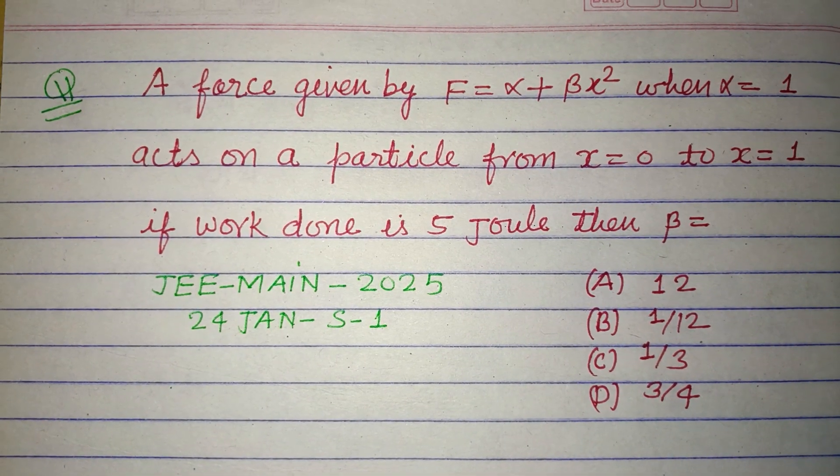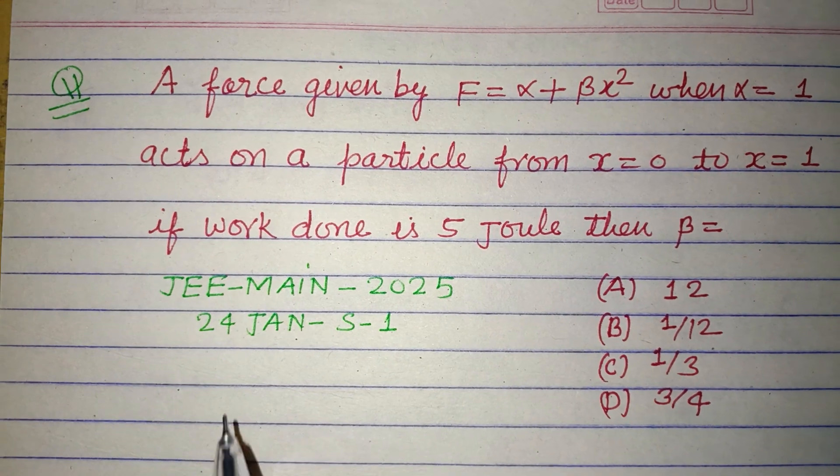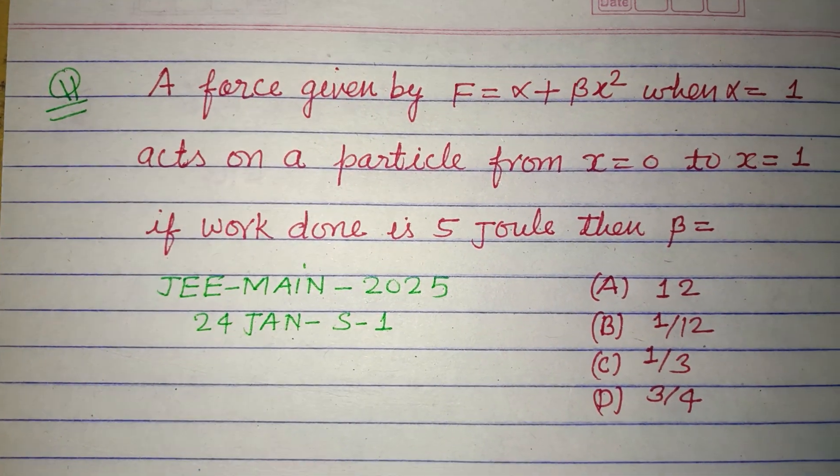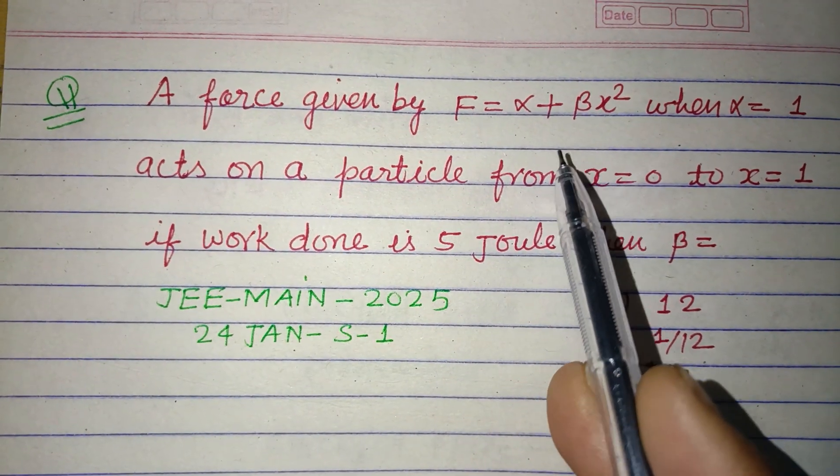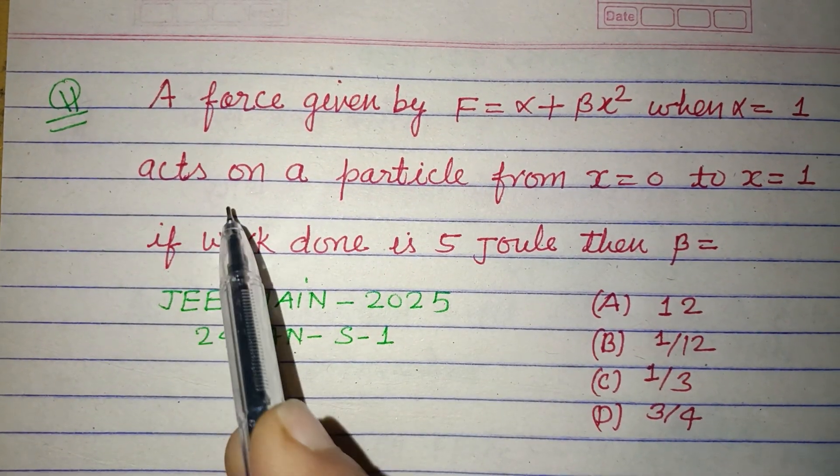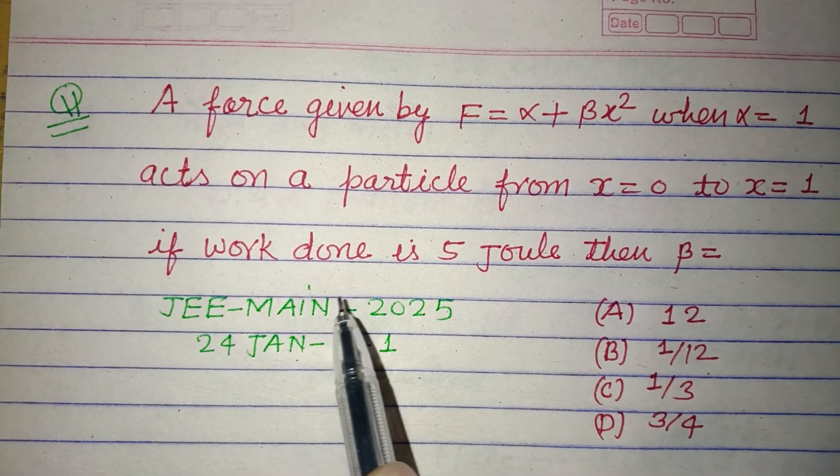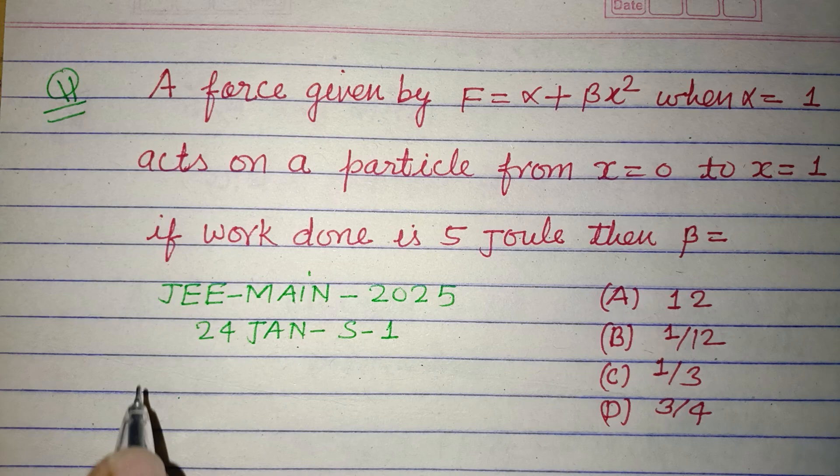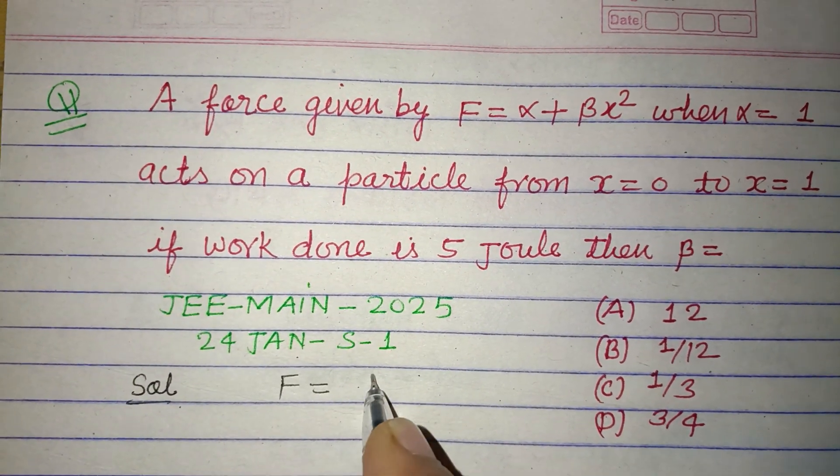Hello viewers, warm welcome to this YouTube channel. This is a question from JEE-MAIN 2025, 24 January Shift 1. A force given by F = α + βx² when α = 1 acts on a particle from x = 0 to x = 1. If work done is 5 joules, then β = ?